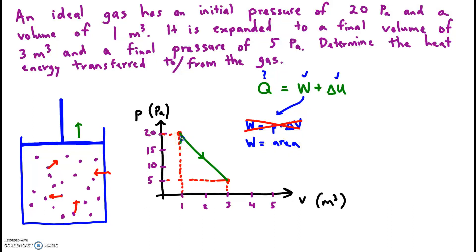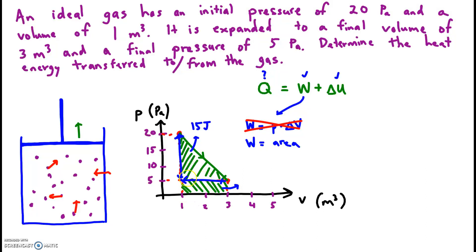I'm going to break this area into a triangle stacked on top of a rectangle. If you do 1 half base times height — the base goes from 1 to 3, the height goes from 5 to 20 — 1 half times 2 times 15, this is just 15 joules. And if you do base times height for the rectangle, we don't need the 1 half: 2 times 5 is 10. So the total work done is 15 plus 10, which is 25 joules.